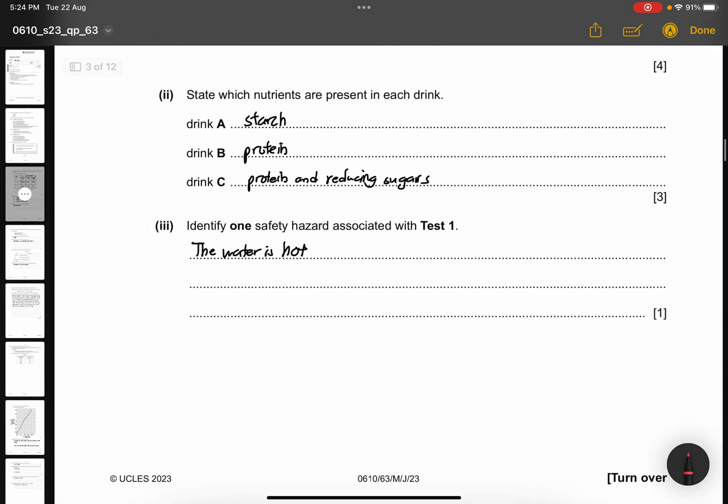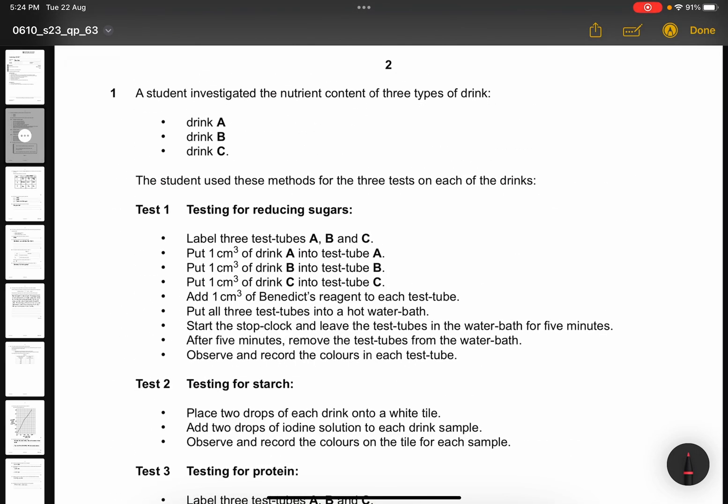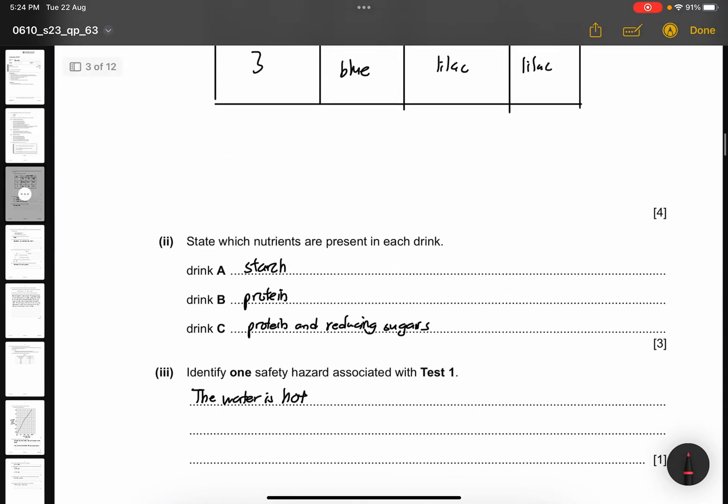Part 3, identify one safety hazard associated with test 1. So you see test 1, they are putting in a water bath. So the water bath is definitely maintaining a particular temperature. So we are assuming that the water could be hot.